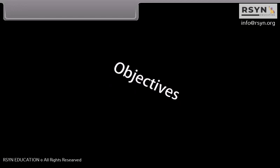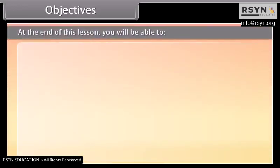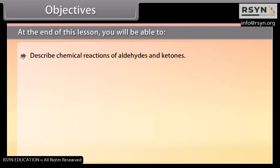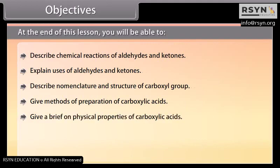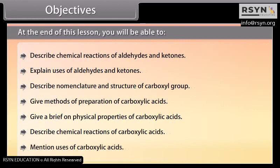Objectives. At the end of this lesson, you will be able to: describe chemical reactions of aldehydes and ketones; explain uses of aldehydes and ketones; describe nomenclature and structure of carboxyl group; give methods of preparation of carboxylic acids; give a brief on physical properties of carboxylic acids; describe chemical reactions of carboxylic acids; and mention uses of carboxylic acids.